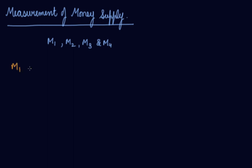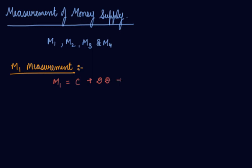We will first study the M1 measurement. In M1, money supply is equal to C plus DD plus OD. C refers to currency, which includes your notes and coins.